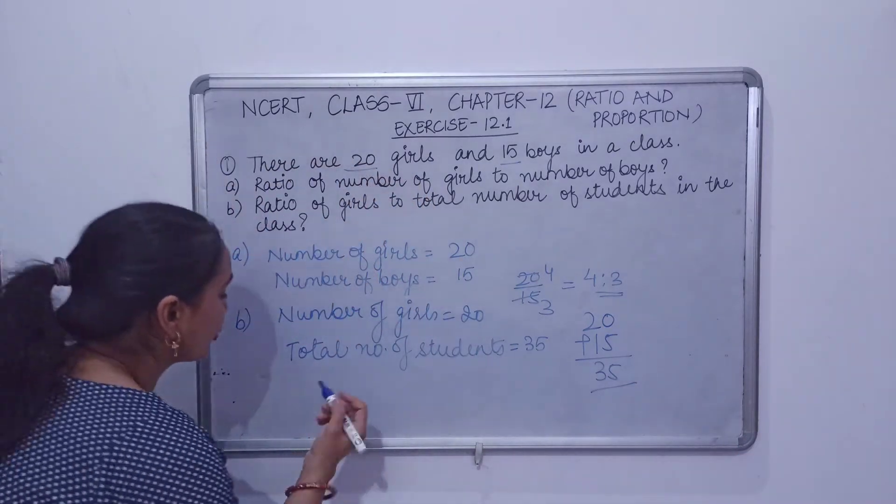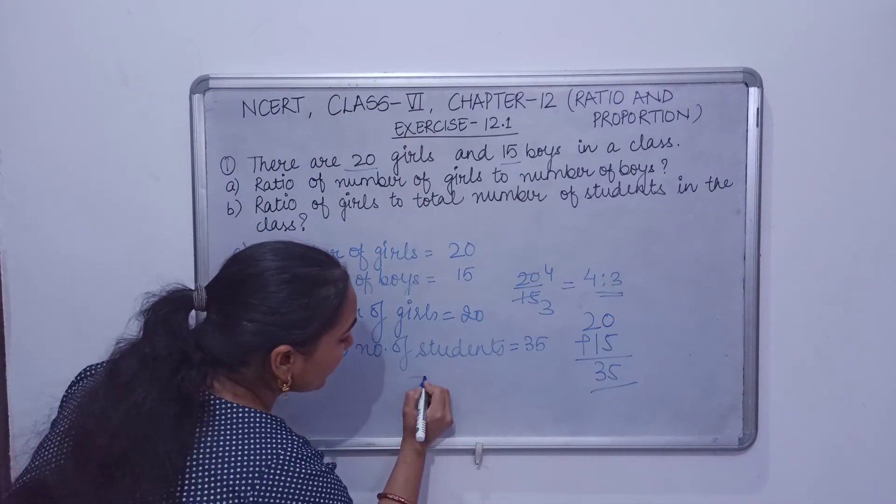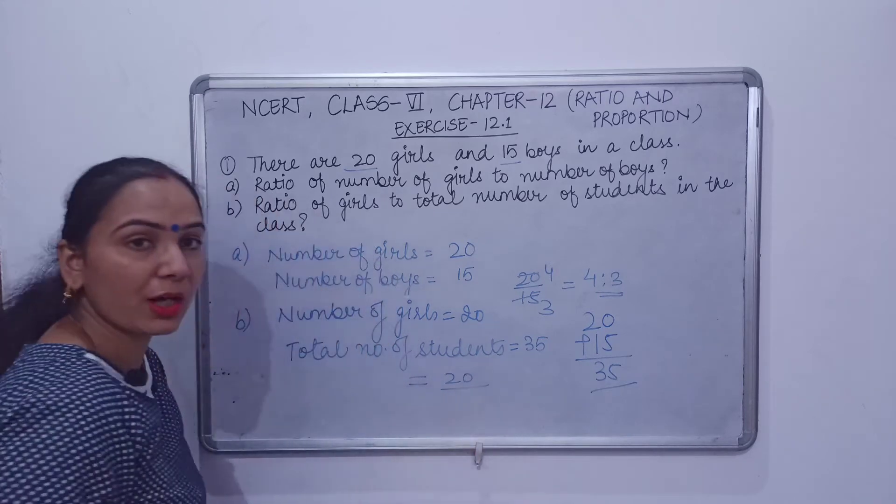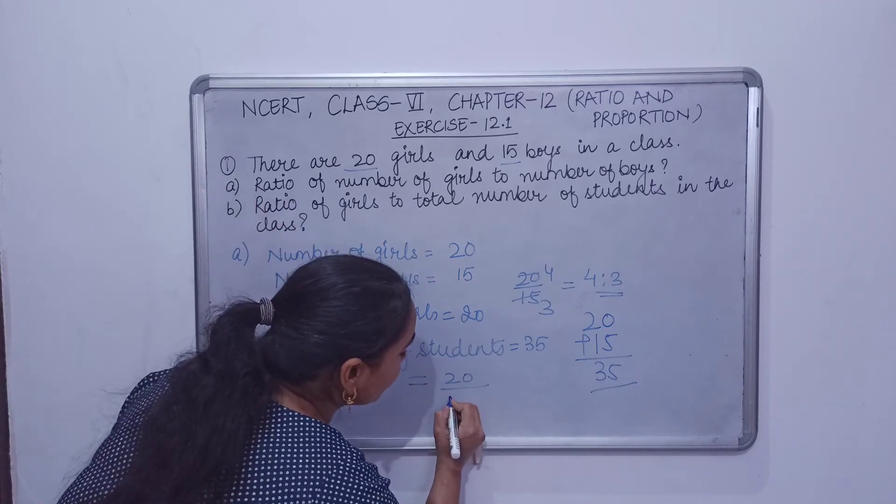Now what do we have to do? We have to find the ratio. So how do we get? Number of girls upon total students, which is 35.